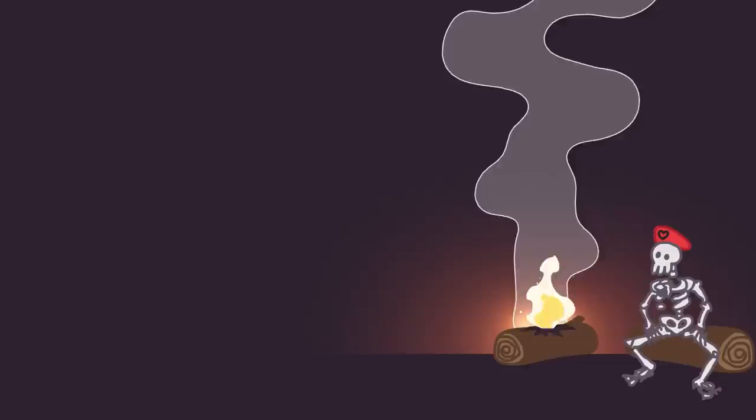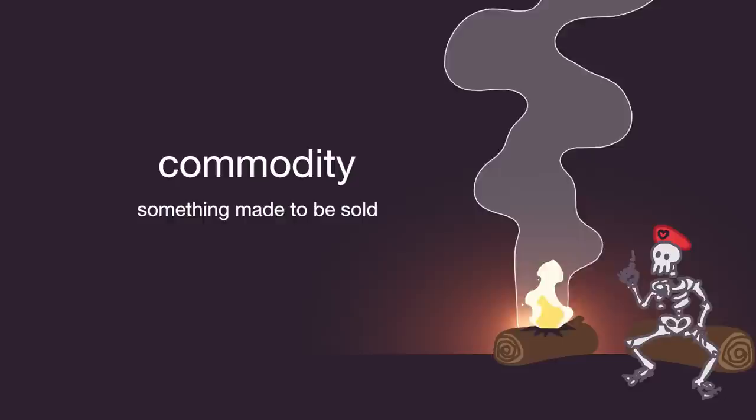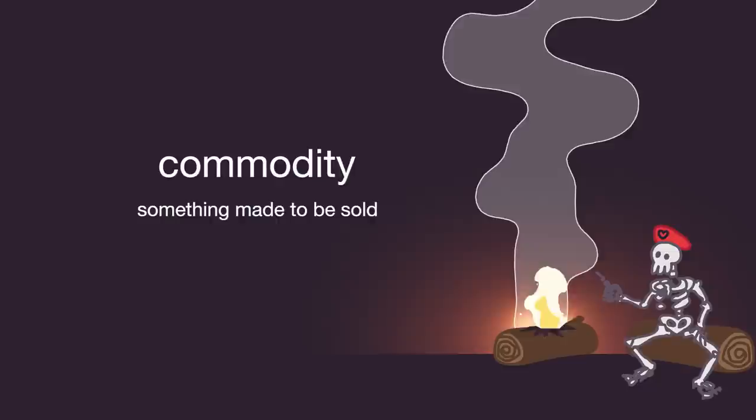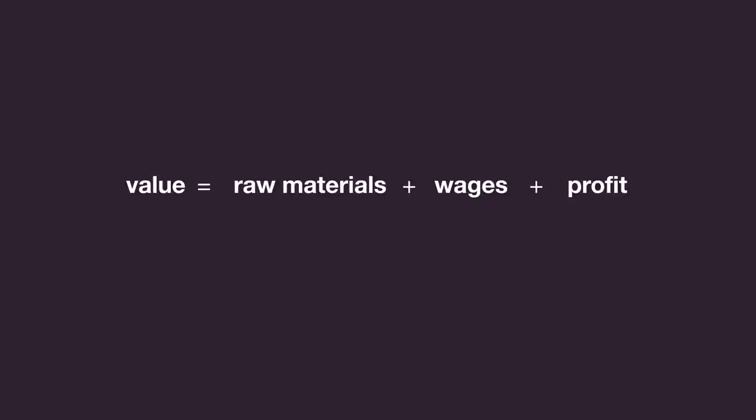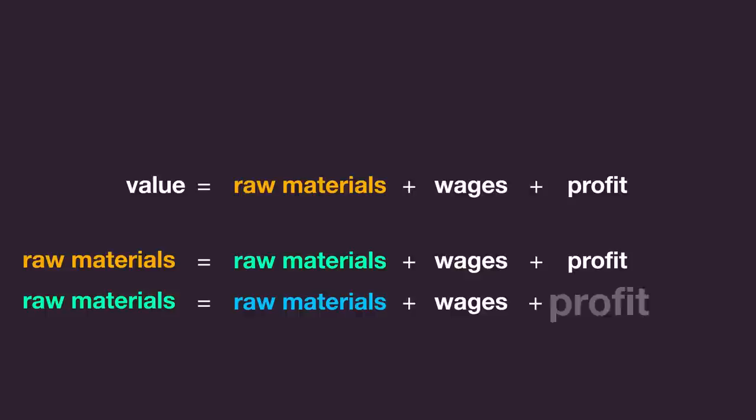When something is made specifically to be sold, it's called a commodity. The value of a commodity, that is the price that it sells for, is equal to the value of the raw materials that went into making it, the wage paid to the worker who made it, and the profit that goes to the capitalist. Because the value of raw materials can also be broken down into these three parts, the value of commodities is roughly proportional to the average amount of labor it took to make them across an entire industry.